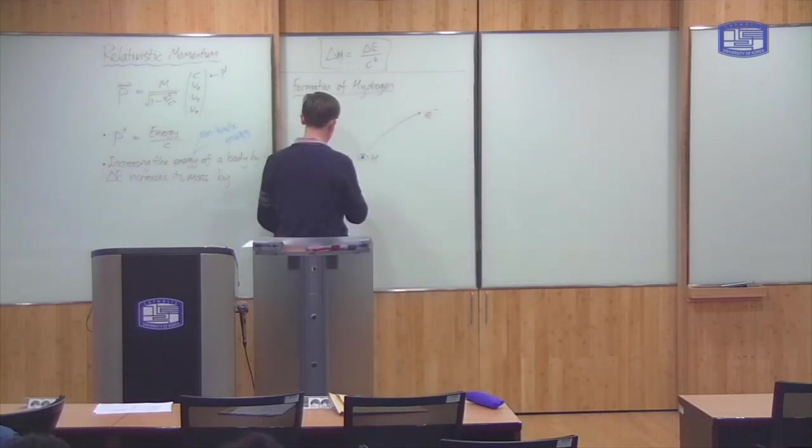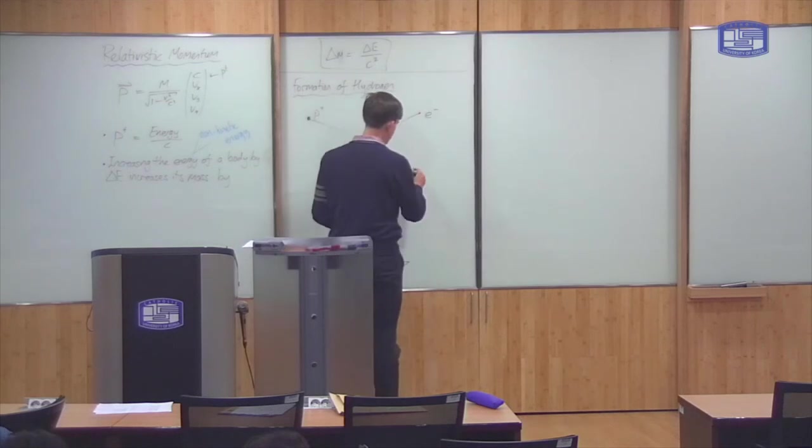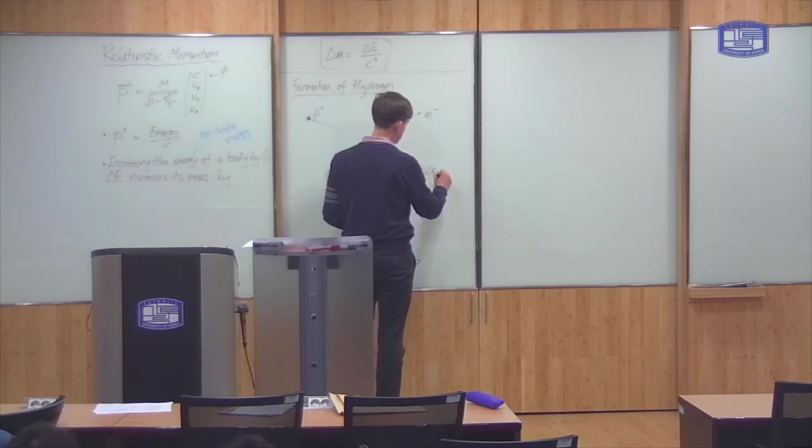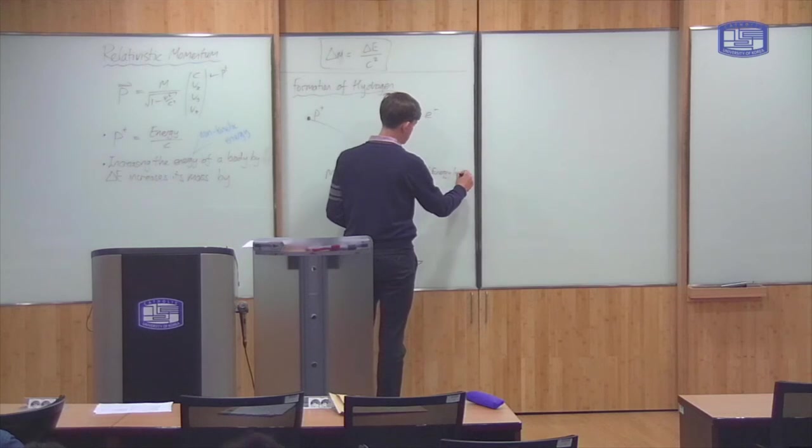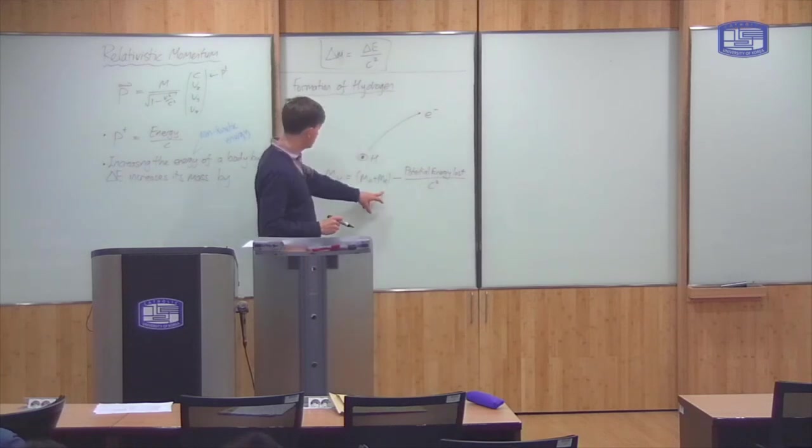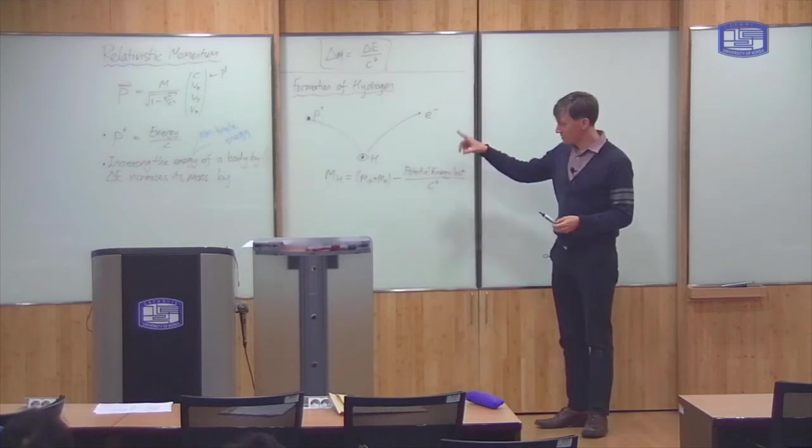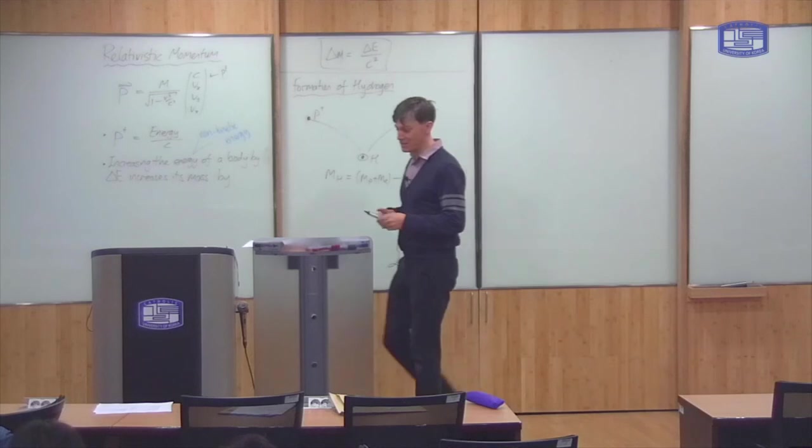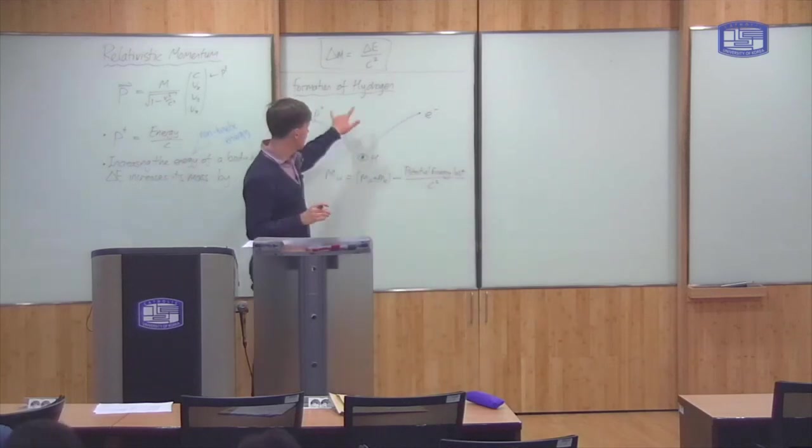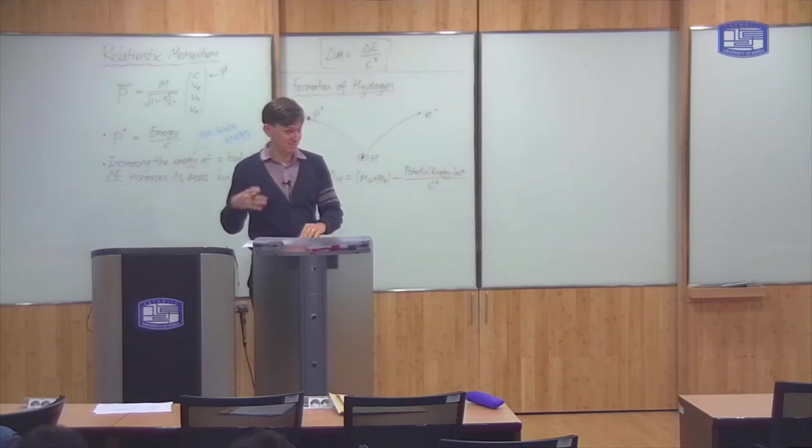What we expect to find is that the mass of hydrogen should be equal to the mass of the things it's made of, the mass of the proton plus the mass of the electron, minus the electrical potential energy lost, divided by c squared. As you bring them together, they lose energy. Therefore, according to this formula, the total mass should decrease by this amount. The masses of all of these things are known to a very high degree of accuracy, as is the potential energy that you lose in the process of making hydrogen. So, this is something we can check experimentally.